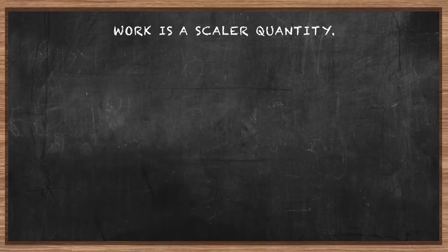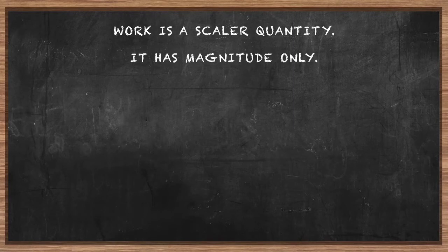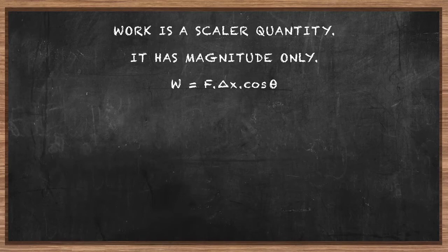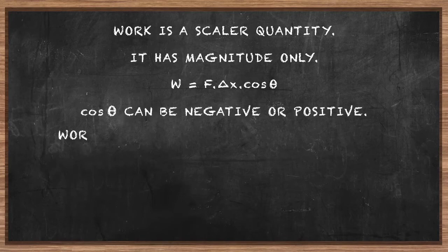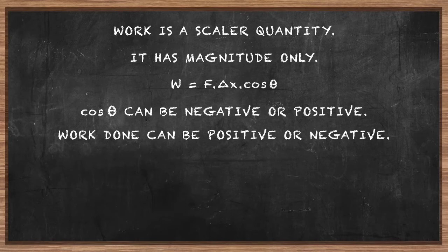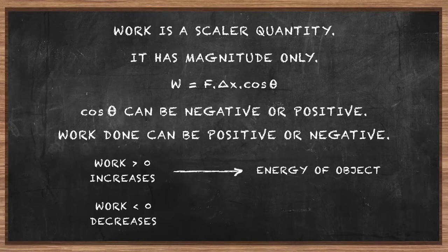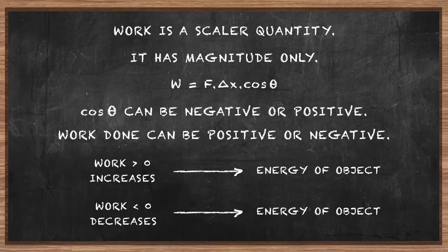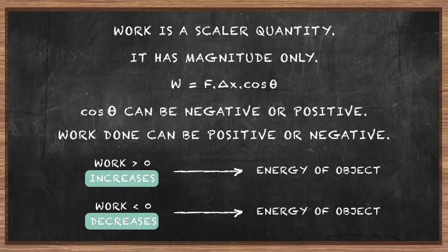Work done is a scalar quantity — it has magnitude only and is associated with energy. There is no direction associated with the amount of work done or energy transferred. Because cos theta can be negative or positive, work done can be positive or negative. Positive work increases the energy of the object; negative work decreases the object's energy. The sign tells us about increasing or decreasing the energy of a system, not about direction of motion.